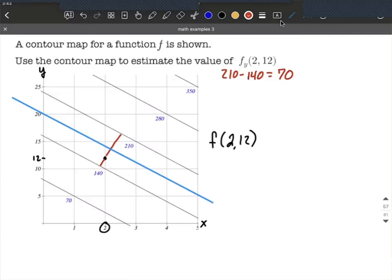However, where our point is, it actually looks like it's not halfway, it looks like it's about a fourth of the way across that gap. So I'm going to say 70 divided by 4 makes 17 and a half. So to do our calculation here, what I'm going to do is say it's bigger than 140, it's approximately 17.5 bigger, which makes this 157.5.